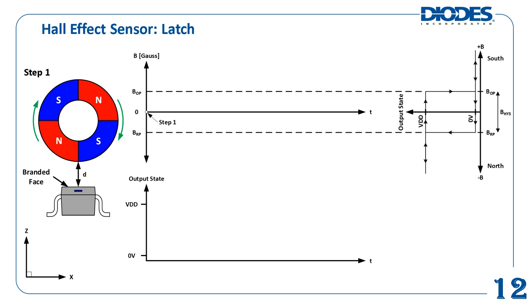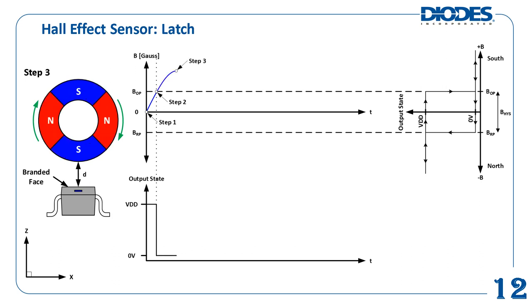In the example diagrams, the latch Hall Effect sensor is at a fixed distance D from a multipole ring magnet with two north poles and two south poles on a rotary shaft rotating clockwise. In step one, the sensor is between a set of north and south poles, so B is zero and the output is at logic high (VDD). In step two, the ring magnet rotates enough that B becomes positive and triggers the BOP threshold — the output transitions from logic high to logic low, from VDD to zero volts. In step three, a south pole is directly over the sensor with B at its most positive; since BOP was already triggered, the output remains at zero volts.